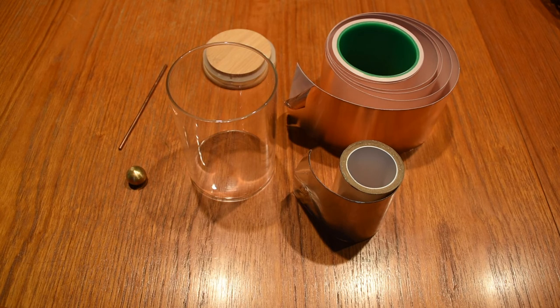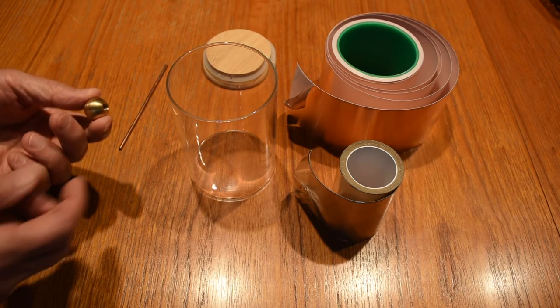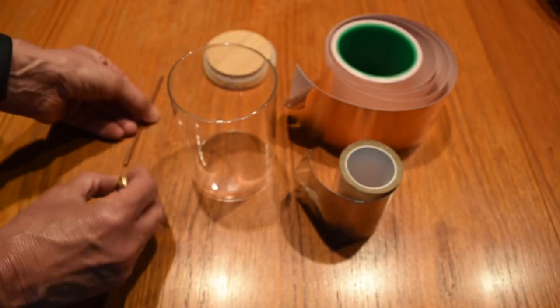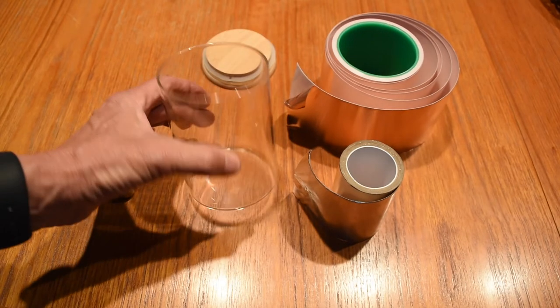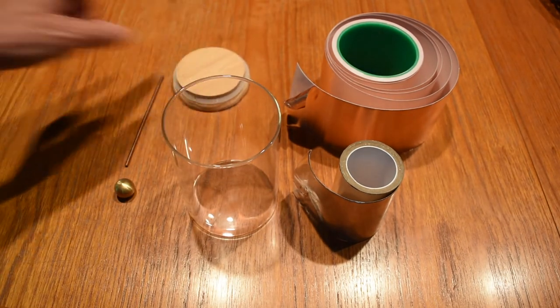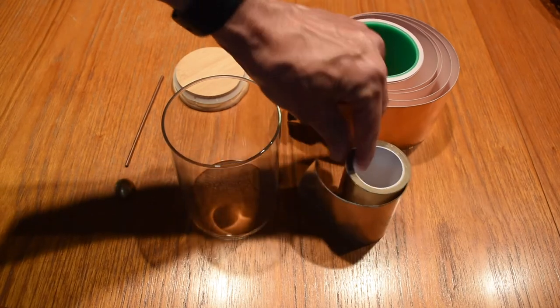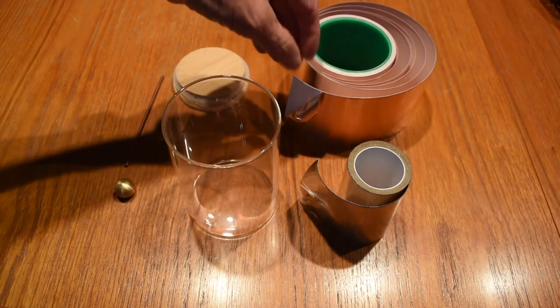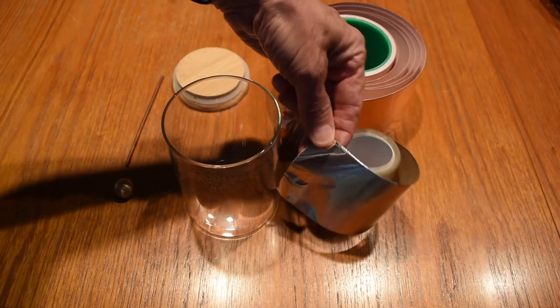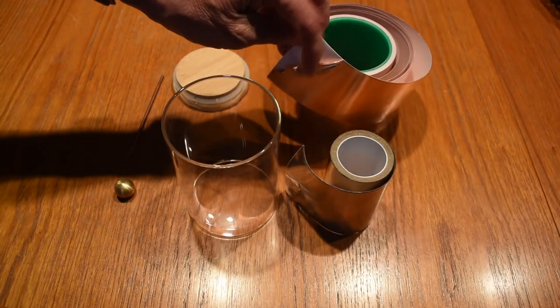Here are the parts I'm going to use to build a Leiden jar. I have a lamp finial, a piece of welding rod, a glass jar that has a wood lid, and I have aluminum and copper tape. These are strips of thin copper or aluminum with an adhesive backing.